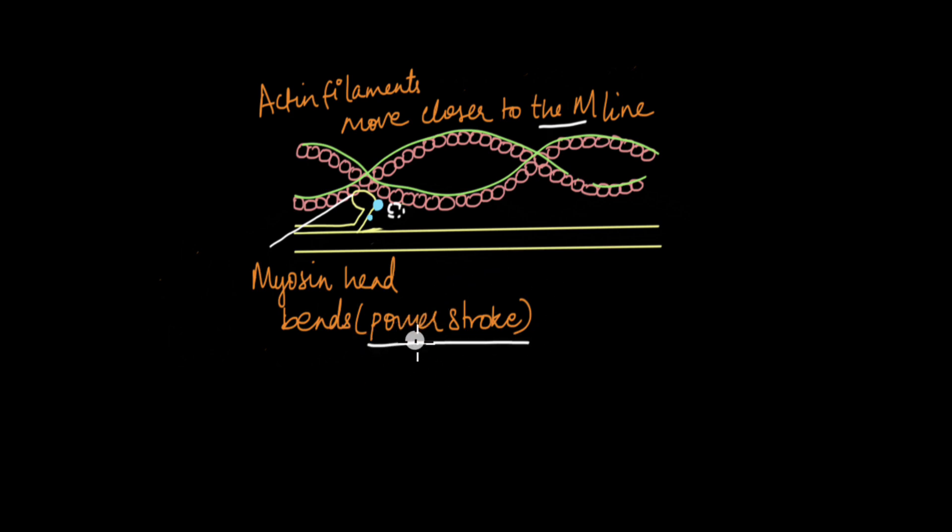So the bending of the myosin head when it is attached to this actin is known as the power stroke. And this power stroke is exactly where the chemical energy is converted to mechanical energy. So this is where the muscle actually contracts. By contract, I mean move close together, right? So that's when the actin filaments move closer to the M line and this is where the muscle is fully contracted.